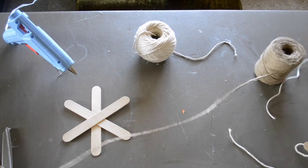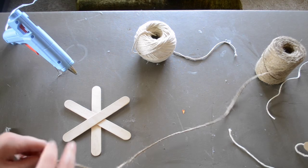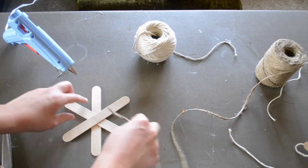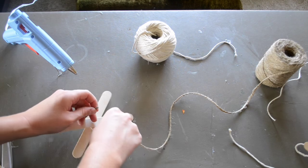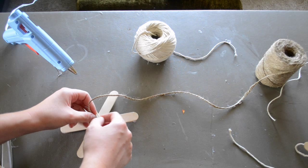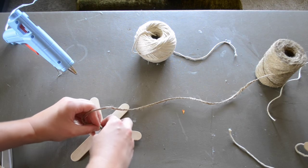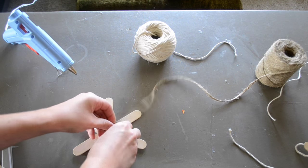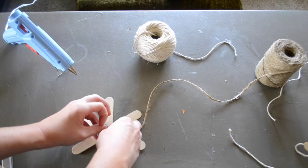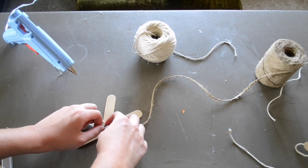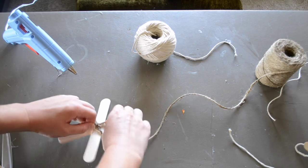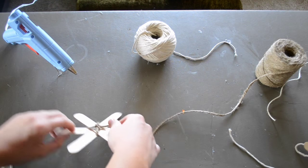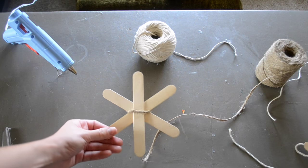Once that's dry the next step is taking your jute or string. For this one I'm going to use jute. You want to tie it in a knot around the back. I'm going to go ahead and double knot this so it stays, and then flip it over.